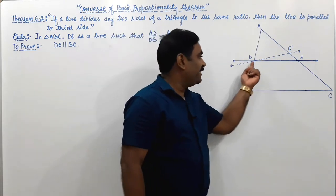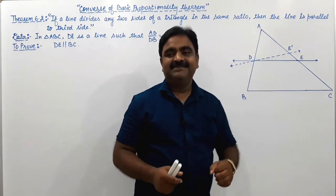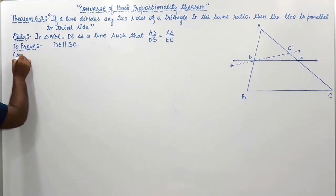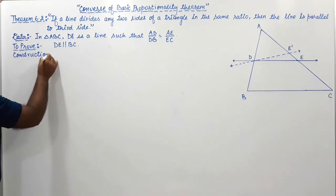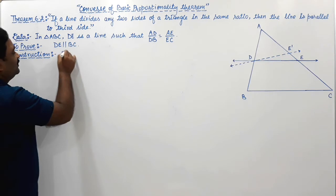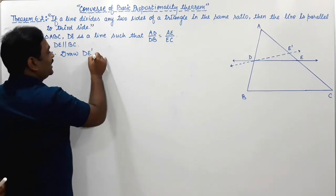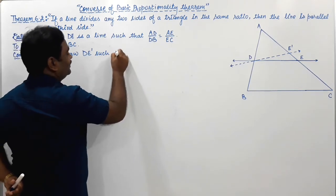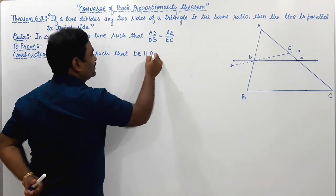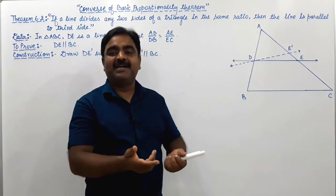To prove this, first we need to do some construction. Draw a line DE' such that DE' is parallel to BC. Write this in the construction section. Construction: Draw DE' such that DE' is parallel to BC. This we have to construct. Now the proof part is going to start.